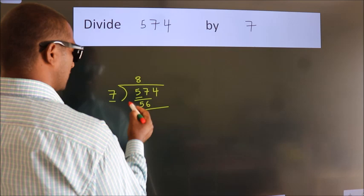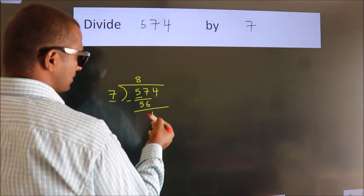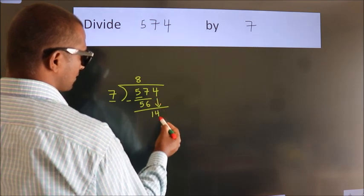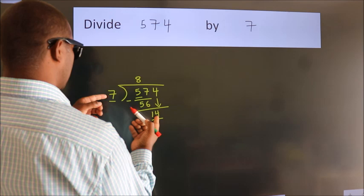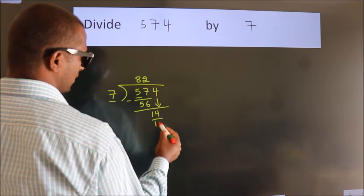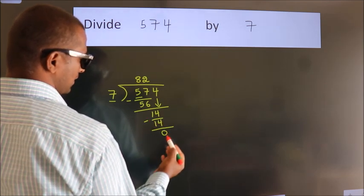Now we subtract and get 1. After this, bring down the next number, 4. So we have 14. When do we get 14 in the 7 times table? 7 times 2 is 14. Now we subtract and get 0.